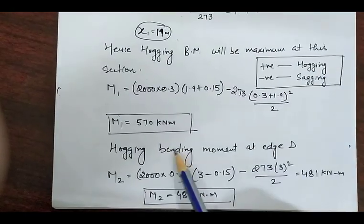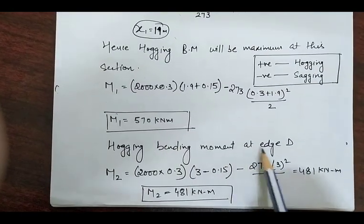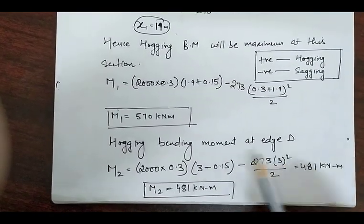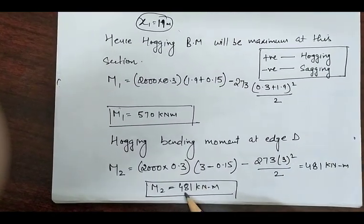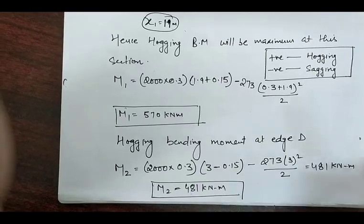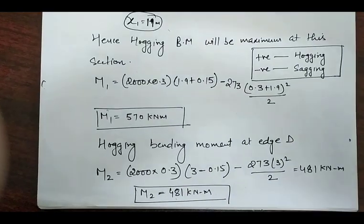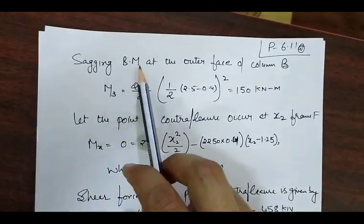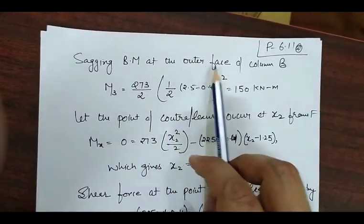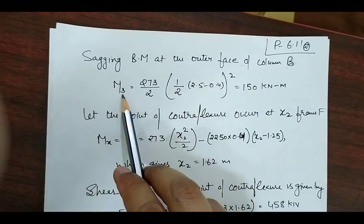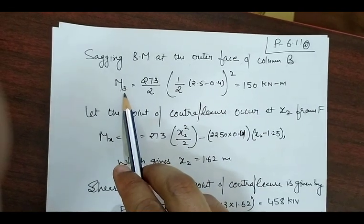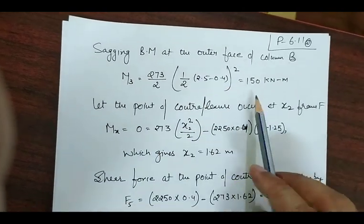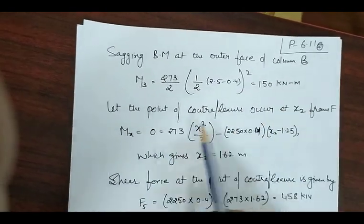The hogging bending moment at edge D is calculated and its value is determined. Similarly, the sagging bending moment at the outer face of column B is M3, and it is similarly calculated from the loading conditions.